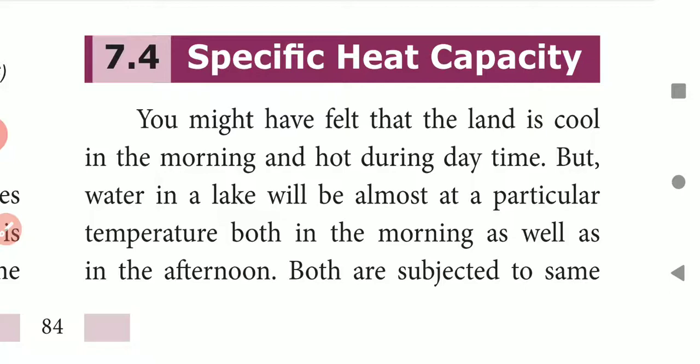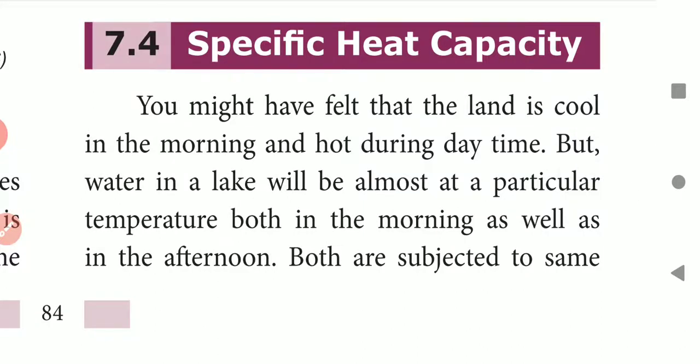In the last class we started with the lesson on heat. We saw what the effects of heat are, and what conduction, radiation, and convection are. Conduction means transfer of heat in solids; convection means transfer of heat through liquids; radiation means transfer of heat without any medium. We also discussed temperature and the three different temperature scales: Celsius, Fahrenheit, and Kelvin, including absolute temperature and conversion formulas.